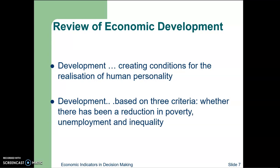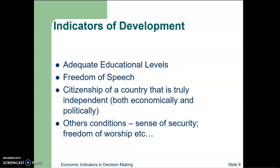The three criteria are: what happens to poverty, unemployment, and inequality. If due to economic growth there has been a decrease in poverty, unemployment, and inequality, then we can say there is development. Indicators of development include adequate level of education, freedom of speech, citizenship of a country that is truly independent both economically and politically, and conditions such as a sense of security and freedom of worship.